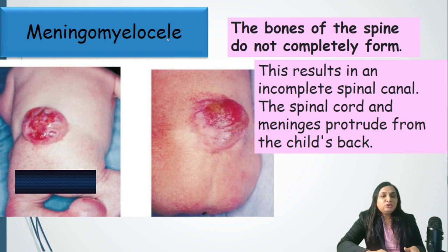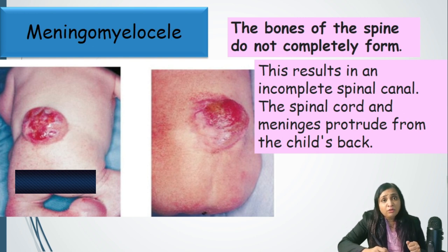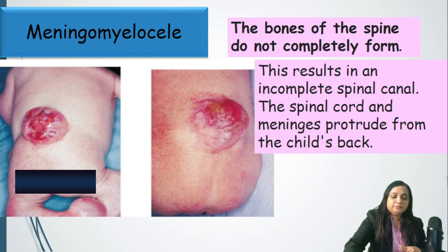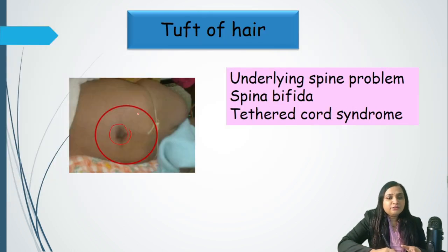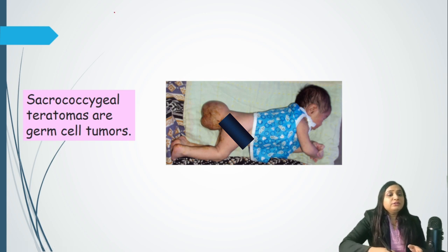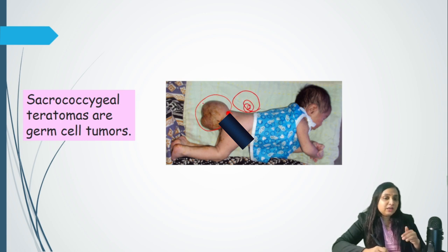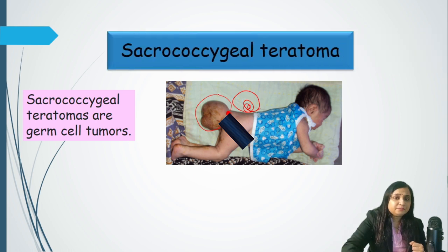In the back and spine, we look for meningomyelocele — the bones of the spine do not completely form, causing herniation of the meninges or spinal cord through the defect. If only meninges herniate, it is a meningocele; if spinal cord and meninges herniate, it is a meningomyelocele. Tuft of hair at the spine may indicate underlying spinal problems like spina bifida or tethered cord syndrome. Sacrococcygeal teratomas are germ cell tumors presenting from the tailbone or sacrum — they are located very low, are very large, and contain many tissues and organs.